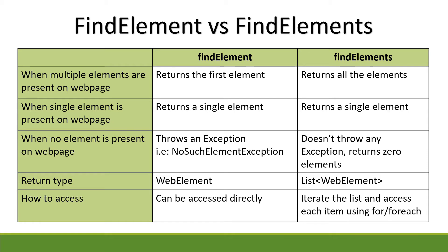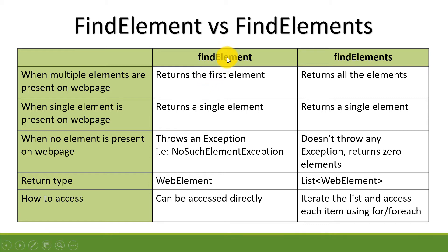So these are the differences. First, when there are multiple elements present on the web page — suppose you are trying to find an element using one locator, but using that locator there are multiple elements available, so it is not a unique element. In that scenario, findElement will return the first element. For example, if you have 10 elements with some name XYZ, findElement will return the first occurrence, but findElements will return all 10 elements.